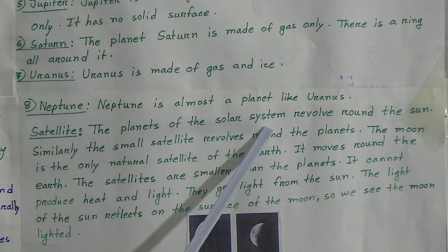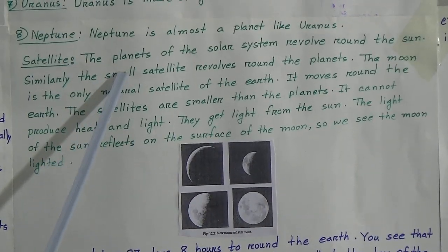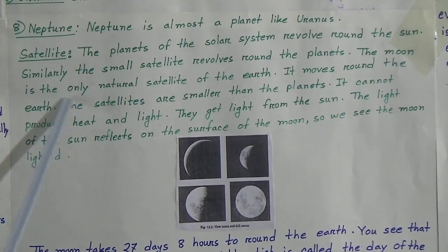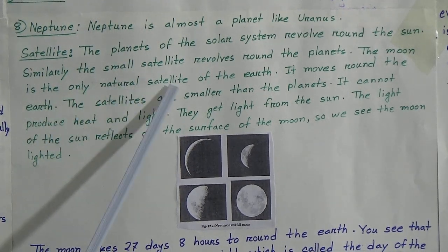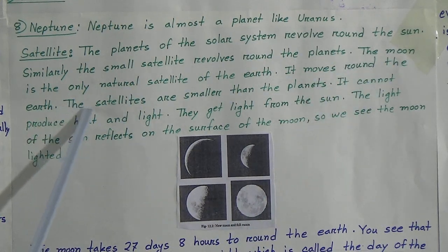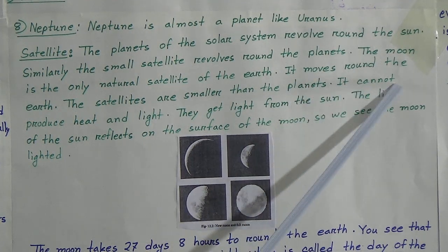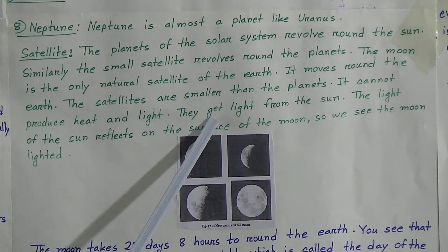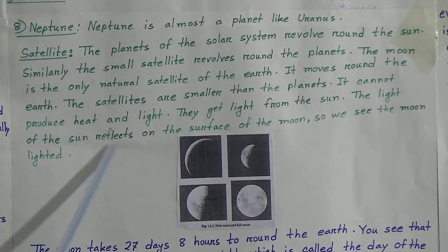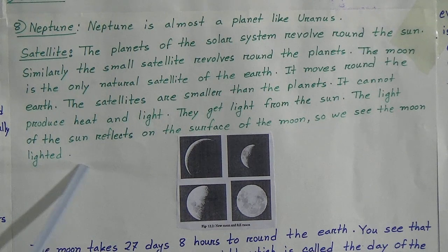Now, the satellite. The planets of the solar system revolve round the sun. Similarly, small satellites revolve round the planets. The moon is a satellite. The moon does not produce heat and light; it gets light from the sun. The light of the sun reflects on the moon, so we see moonlight here.